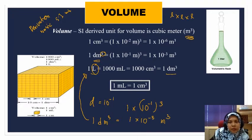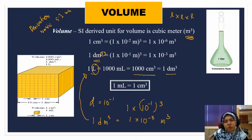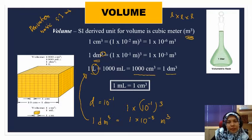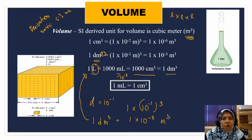1 liter equals 1 decimeter cubic. This decimeter cubic also equals 1,000 centimeter cubic, which is also used in chemistry. 1,000 centimeter cubic equals milliliter, because this is 10 power of negative 3.